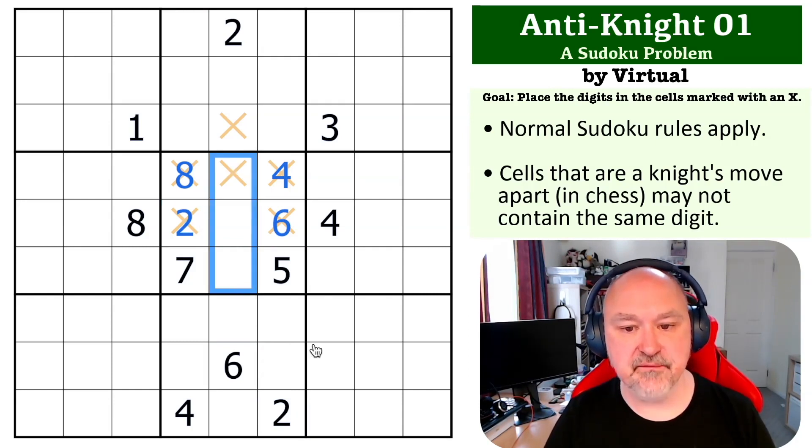These cells are now forced to be from one, three, and nine, but this cell is seen by both one and three by knight's move. So that has to be the nine, and these become a one and three, but we don't have to resolve that for this problem.